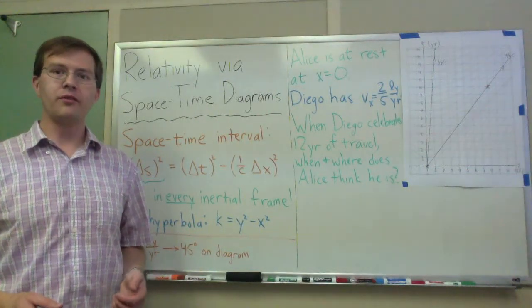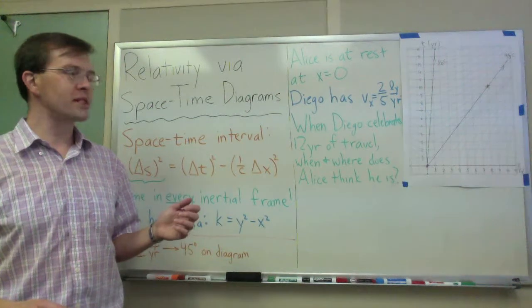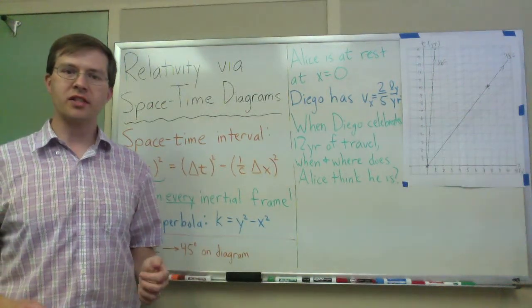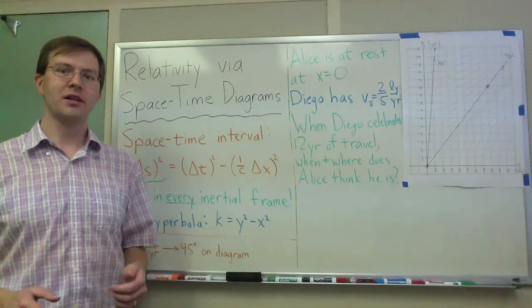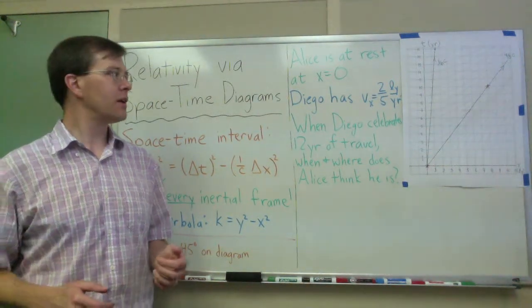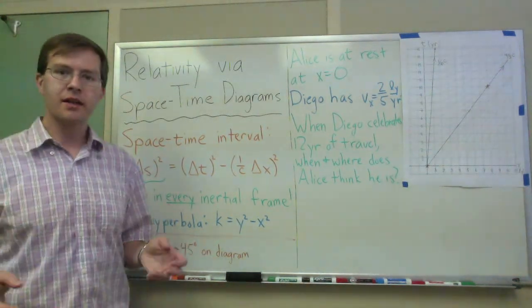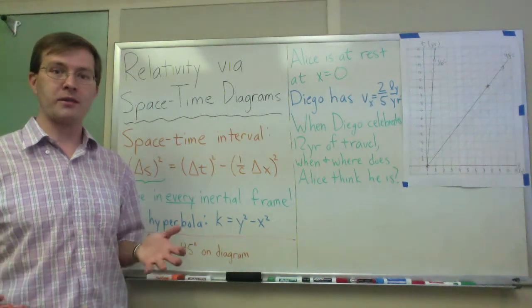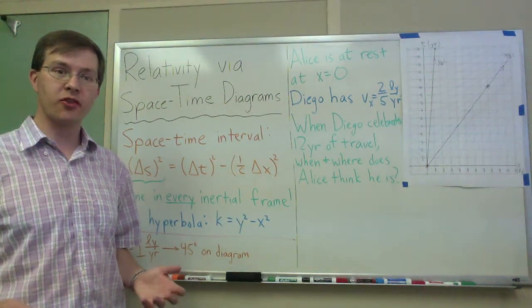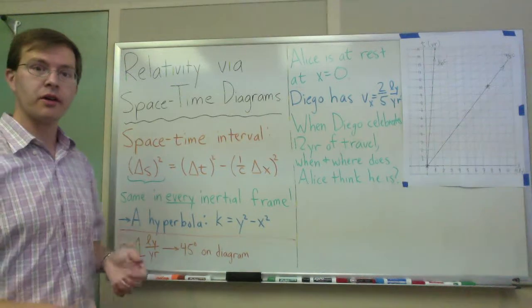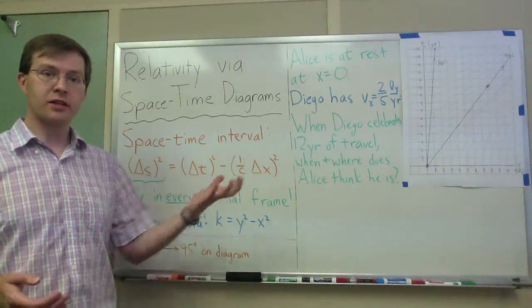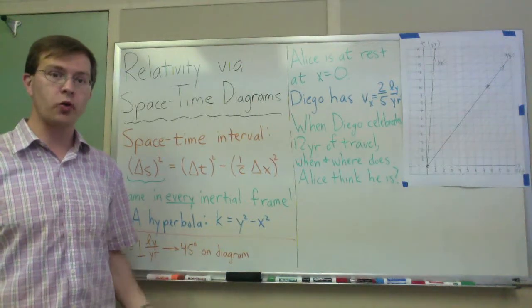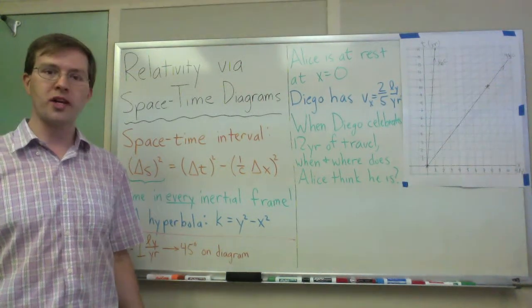I want to do another example of using spacetime diagrams to understand situations in special relativity without needing to use any equations to solve those problems. Once again, this is not a video where I'm explaining the spacetime diagrams in the first place. I did one of those earlier. You can look back at it. This is a video where I'm just using it to do some calculations, to do a quick calculation without using equations.